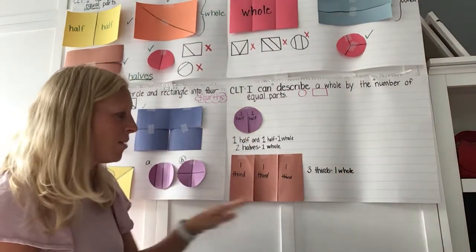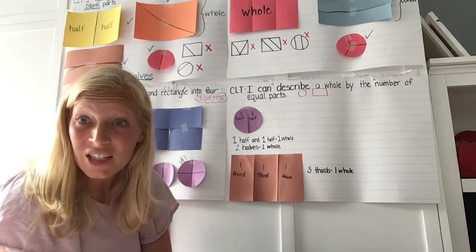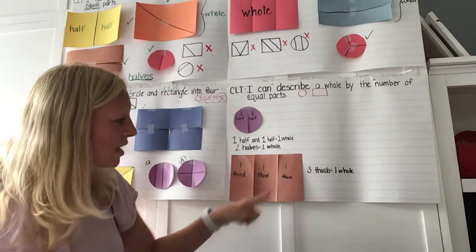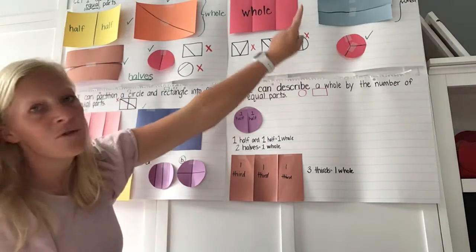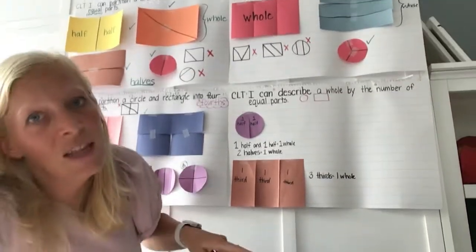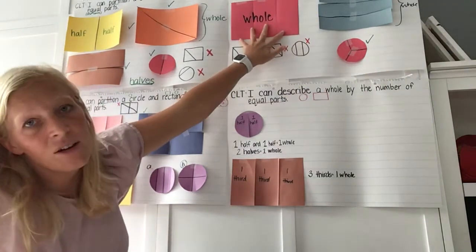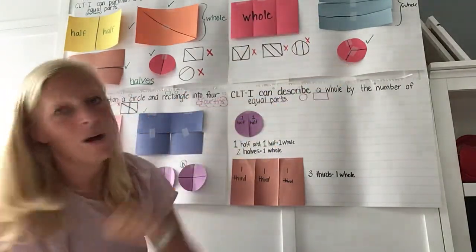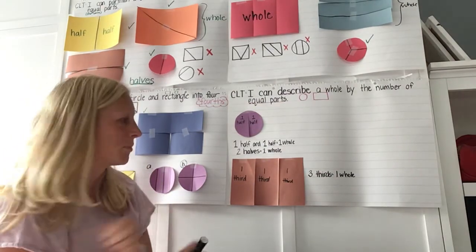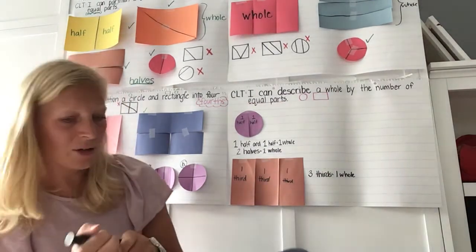When we think about describing this shape by its equal parts, we have three equal parts, and we know from the other day that those are thirds. We need three thirds to make a whole, whether we're doing our rectangles or our circles. Three thirds makes a whole. We had two thirds and we needed one more to make a whole.